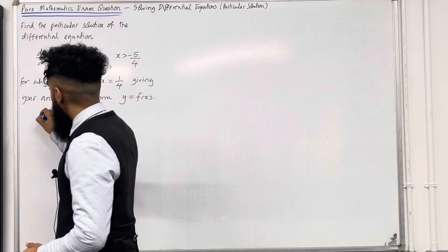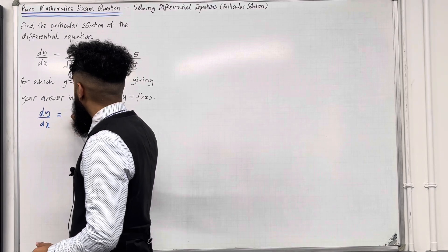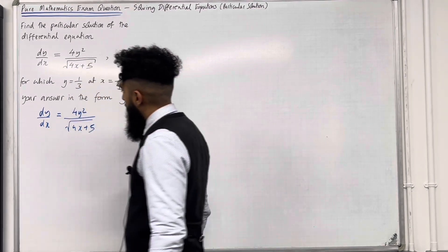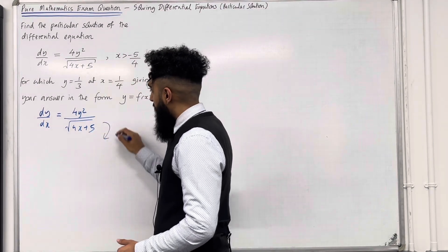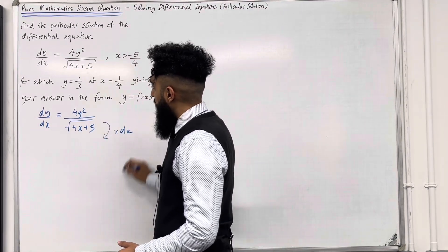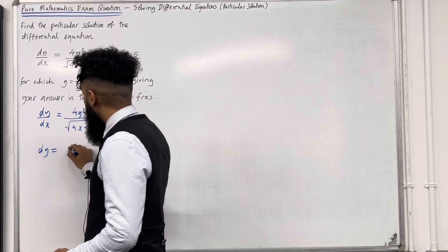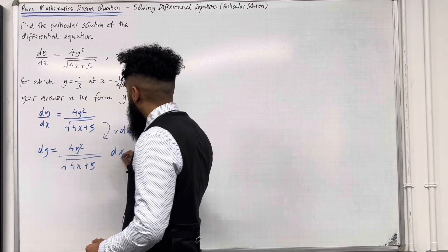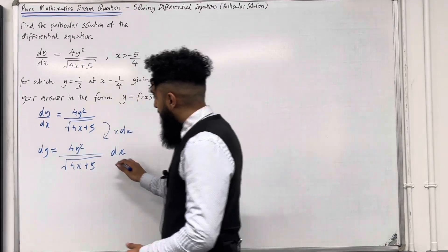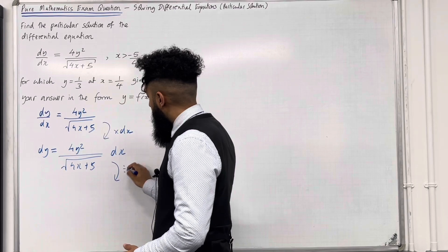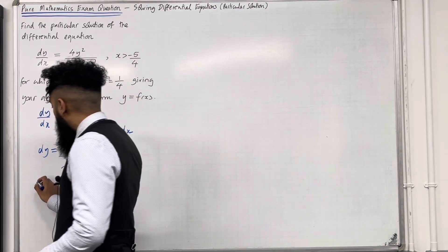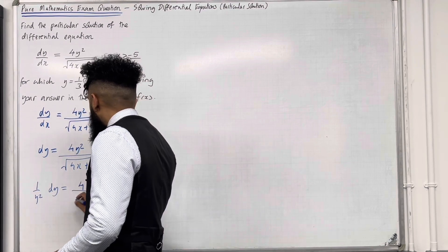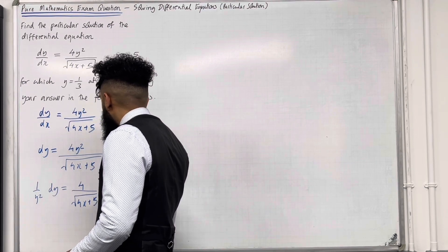I've got the differential equation dy over dx equal 4y squared over square root of 4x plus 5. I can start by multiplying both sides by dx, giving me dy equal 4y squared over square root of 4x plus 5 dx. Then I can divide both sides by y squared, giving me 1 over y squared dy equal 4 over square root of 4x plus 5 dx.